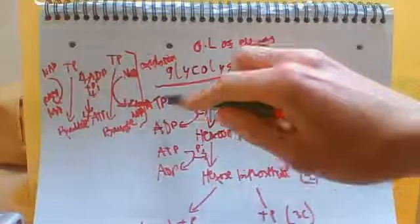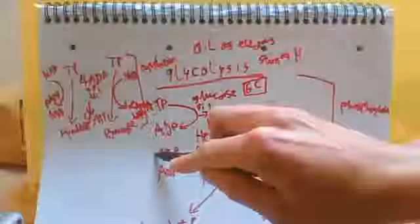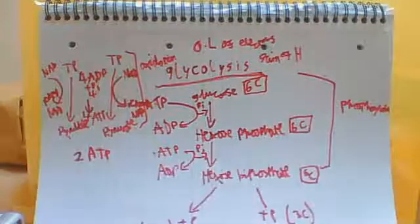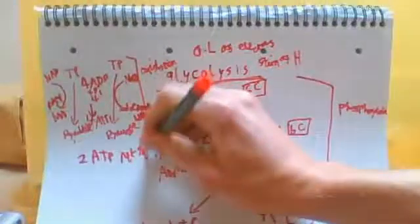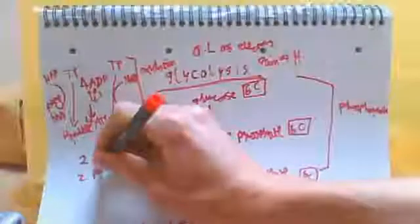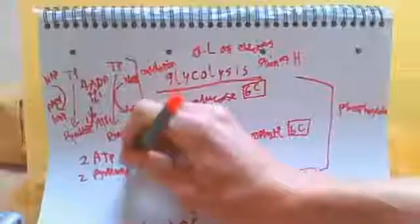But if you have a look at this stage, one ATP, two ATP is actually used. So overall in this process, you're left with two ATP, which is the net gain. Net just means overall gain. Two ATP net gain. And you've also got two pyruvate, and you've also got two reduced NAD.